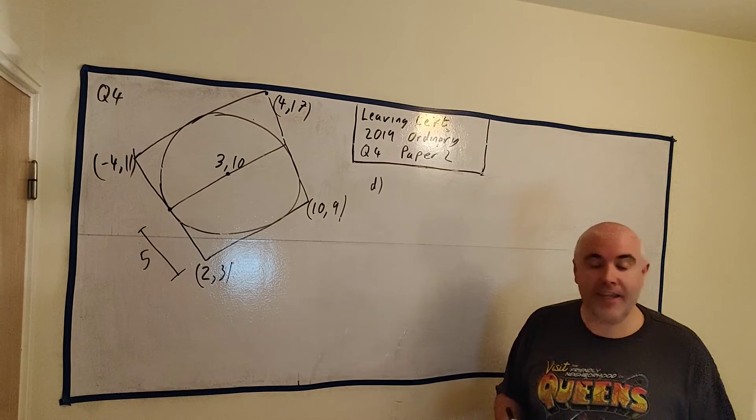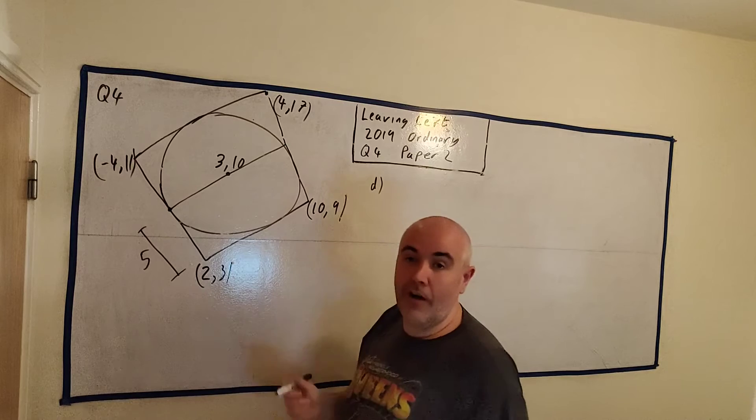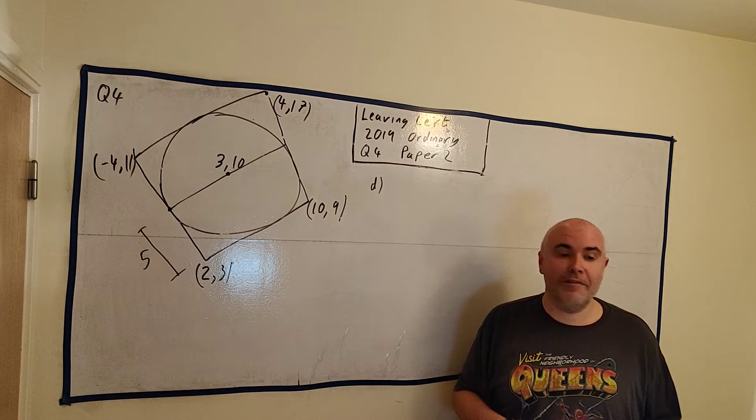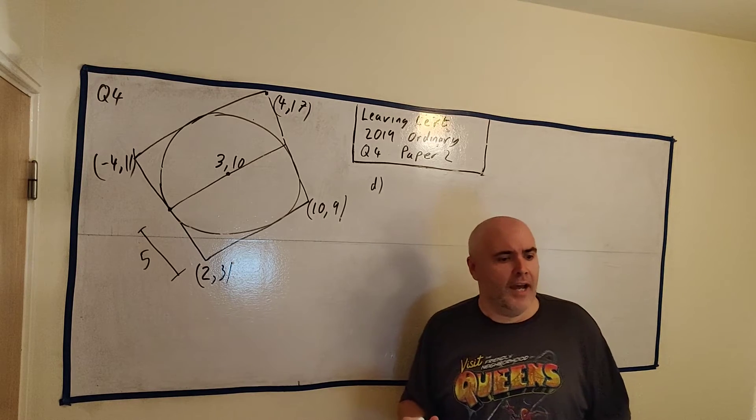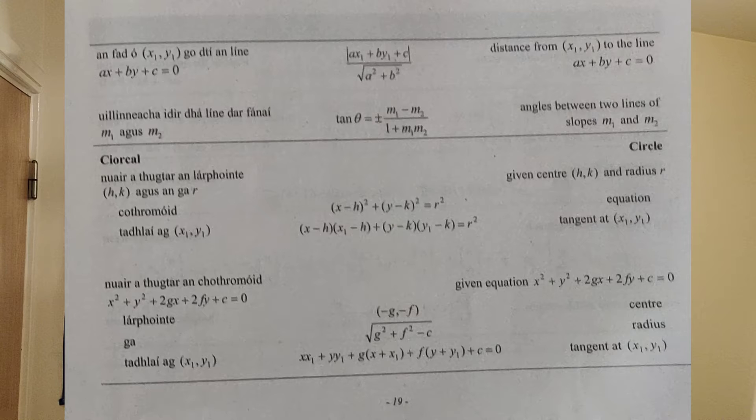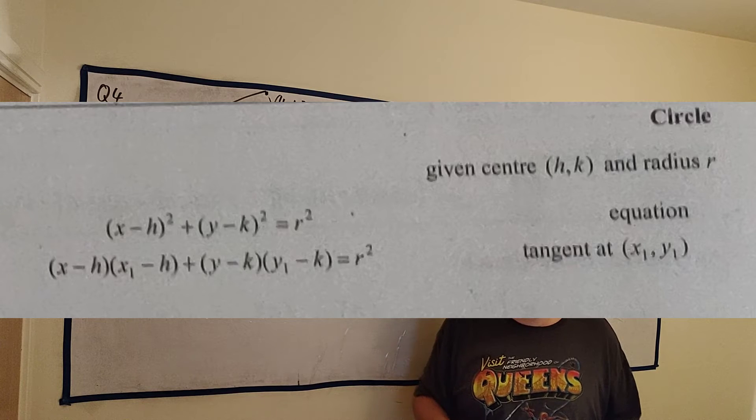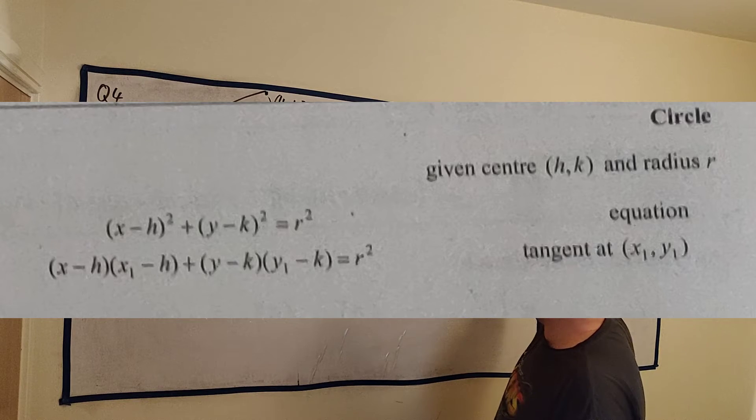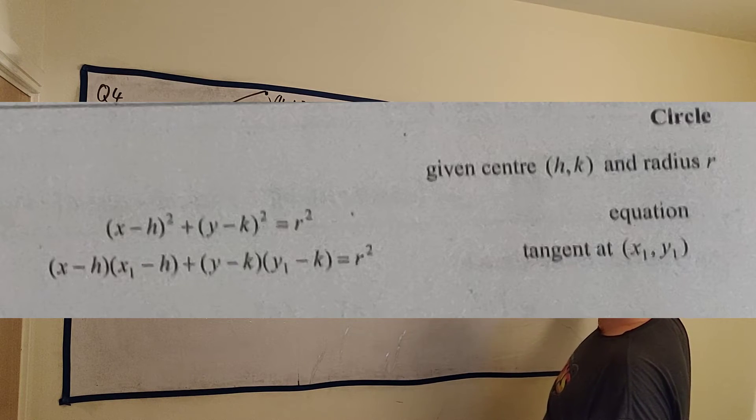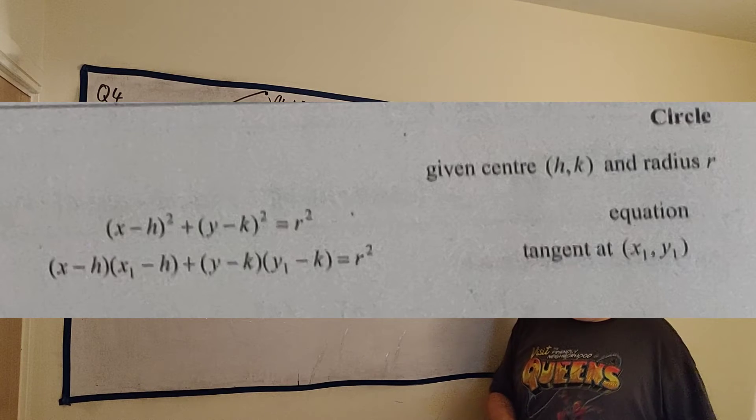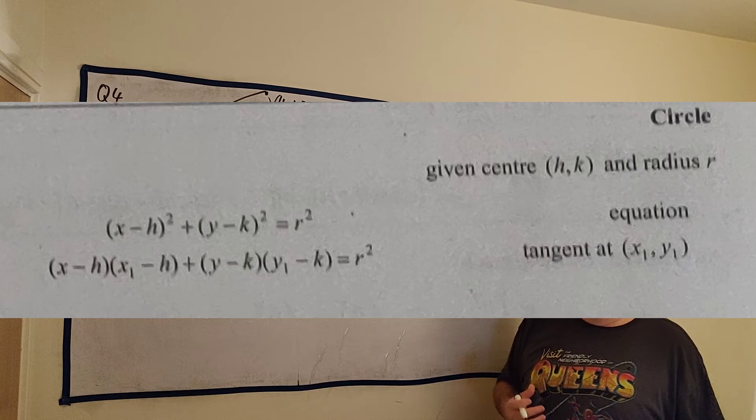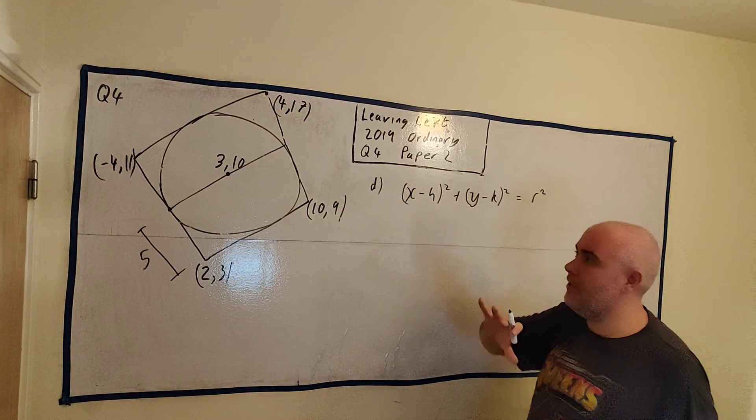Part D asks us to find the equation of this circle here. Now again, we'll go back to our formula book, and there's a formula for that. It's on a different page. I'll show you the page now, and then I will zoom in on the formula we're going to use. There's actually two options, but this is the one we're going to use. And I'm going to copy that onto the board now. It is x minus h squared plus y minus k squared is equal to r squared. And as you can see from in the book, it tells us that h and k are the center of the circle, and r is the radius.